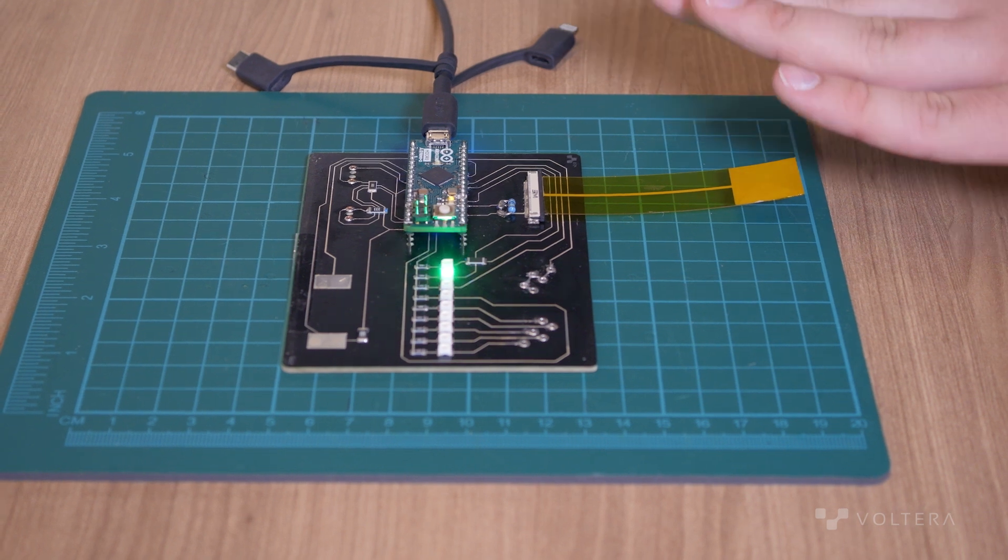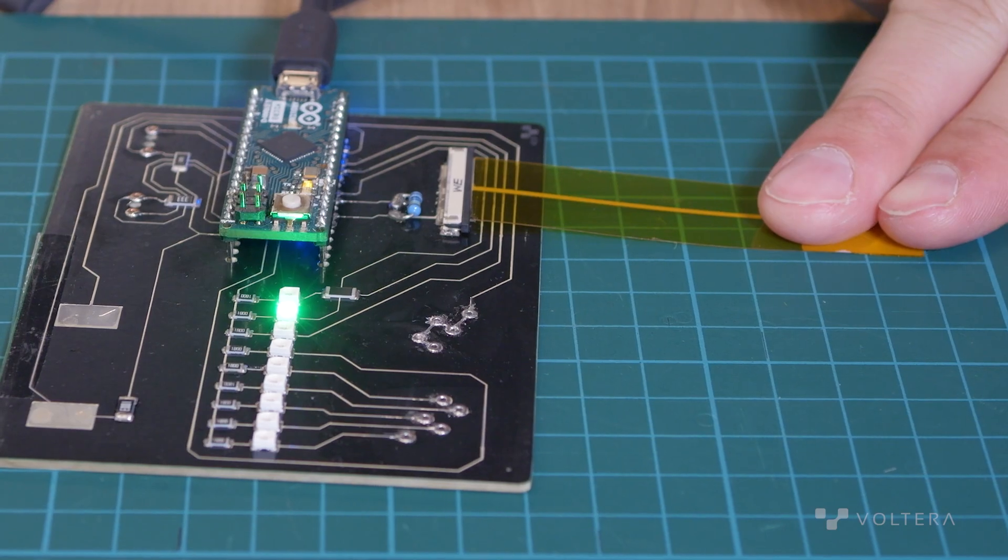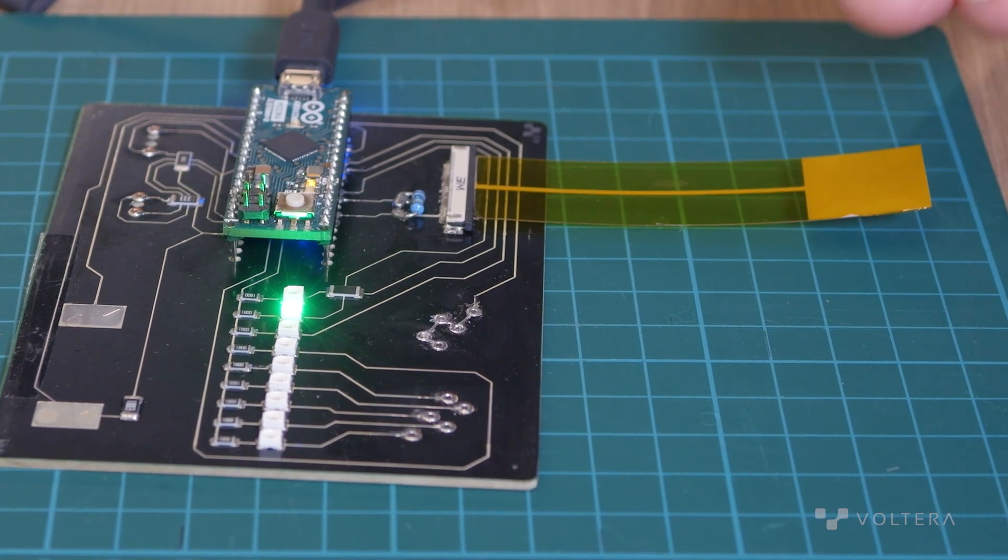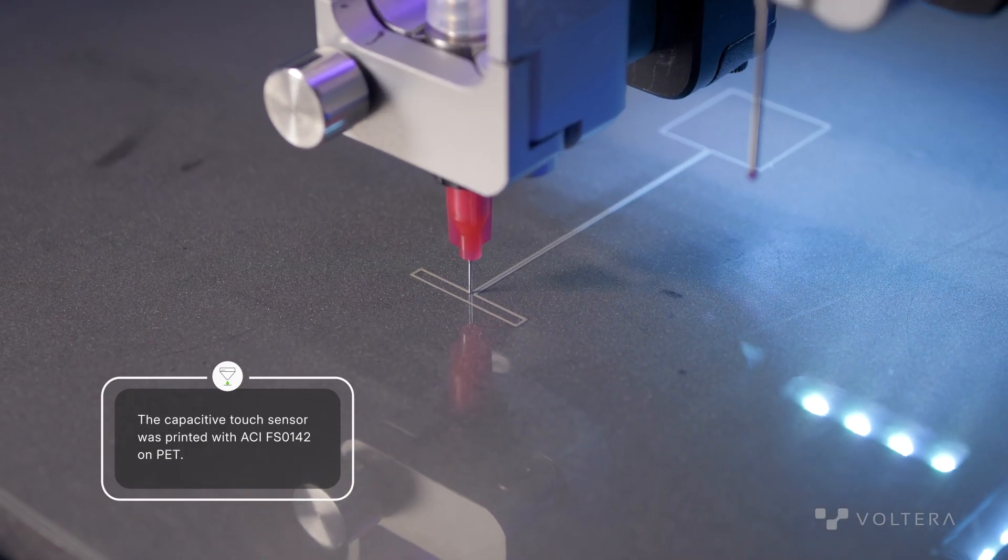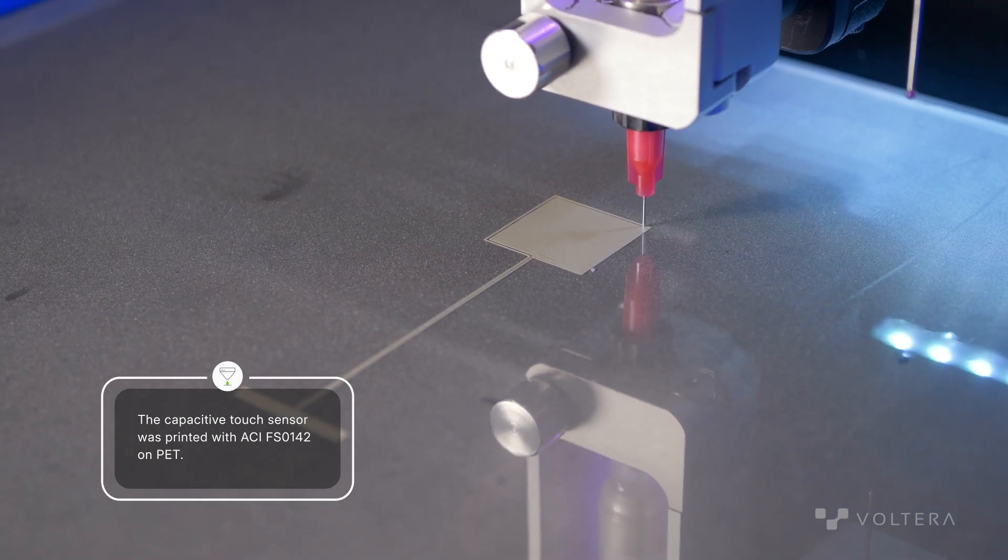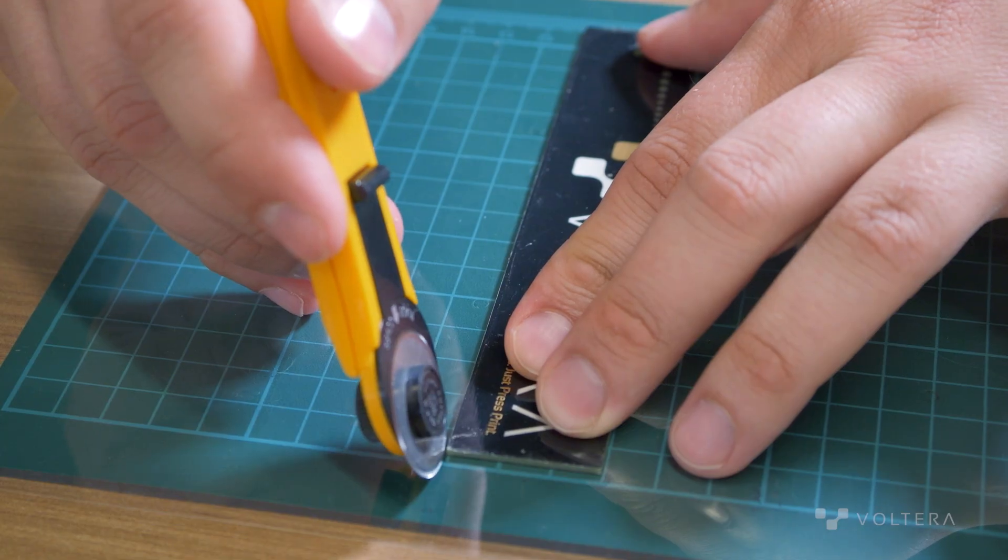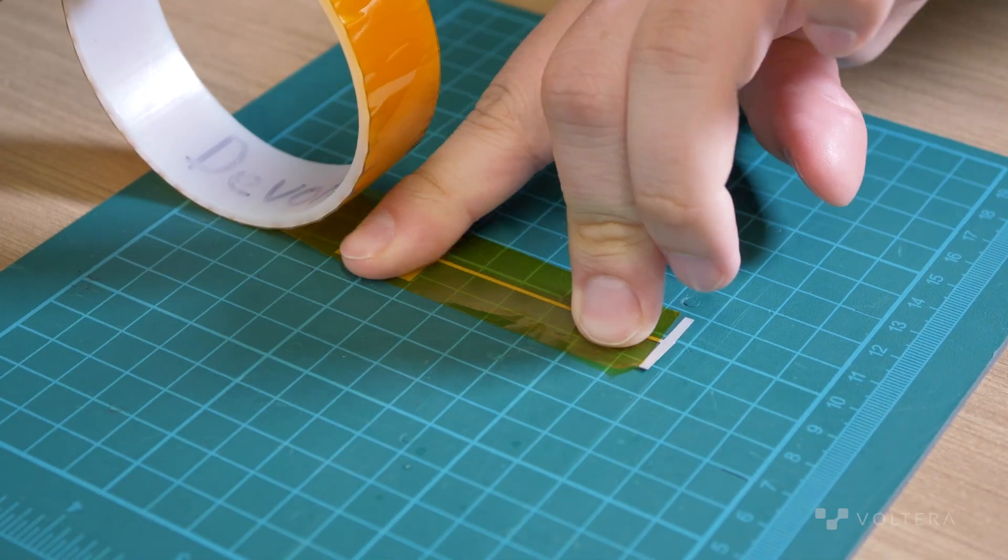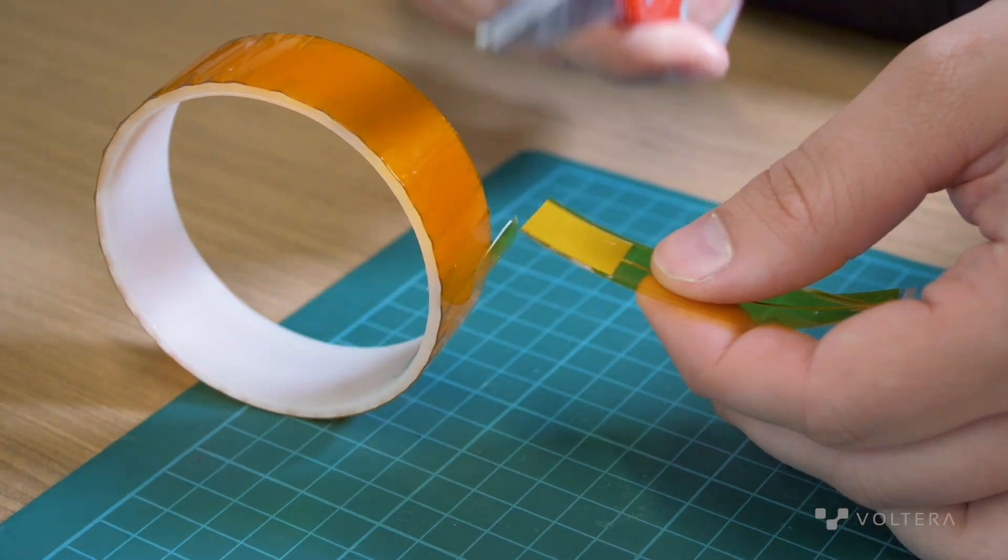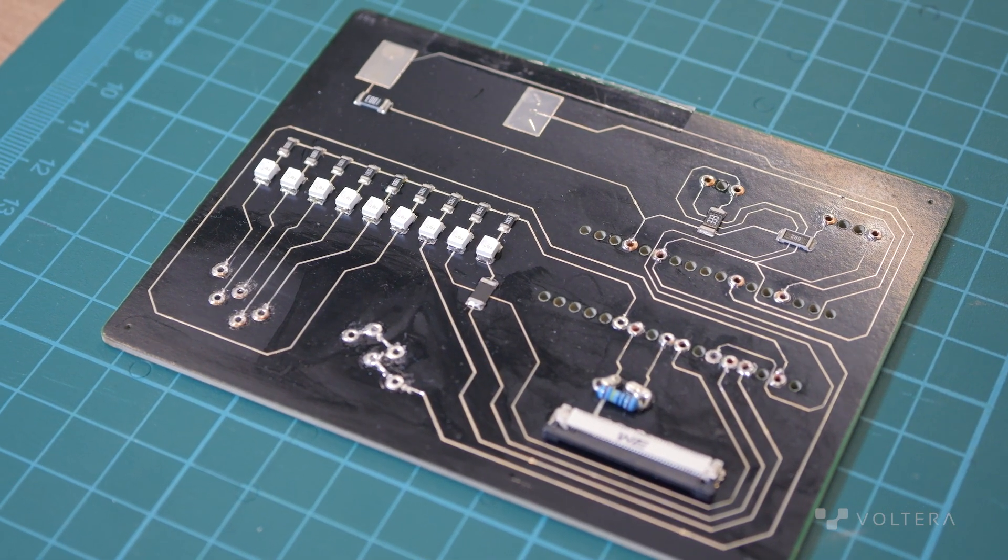The first connection we want to make is for a capacitive touch circuit. Capacitive touch uses the changes in conductivity caused by a human finger, for example, to detect touch. We've printed the capacitive touch circuit onto PET with a Kapton tape backing to reduce interference. In order to test its functionality, we'll need to create a connection from the flexible PET to this traditional PCB on FR1.